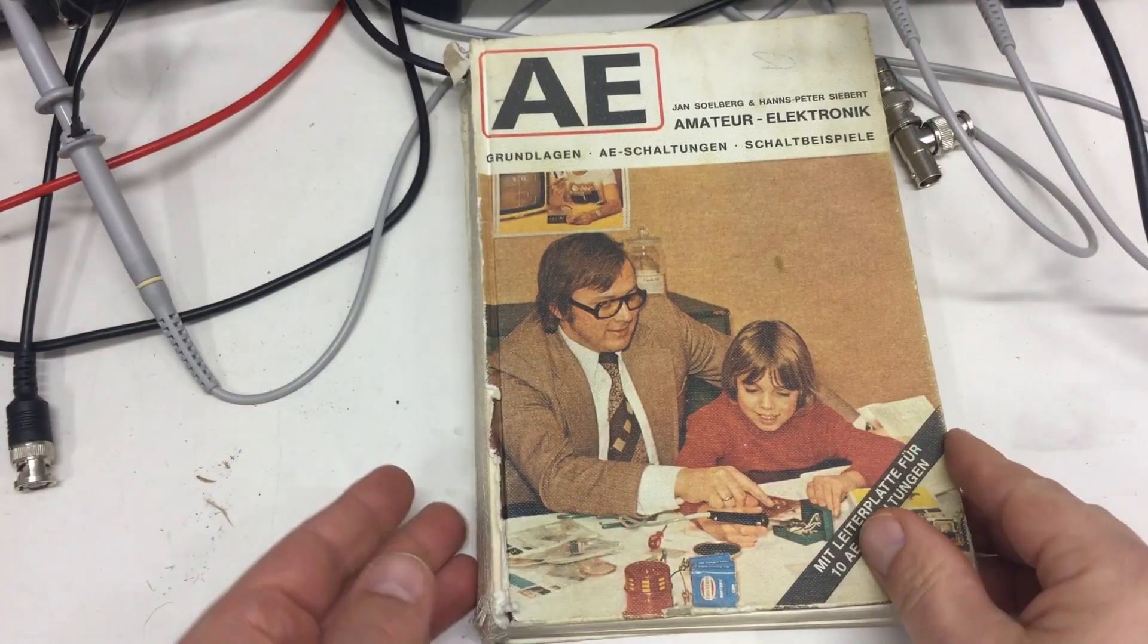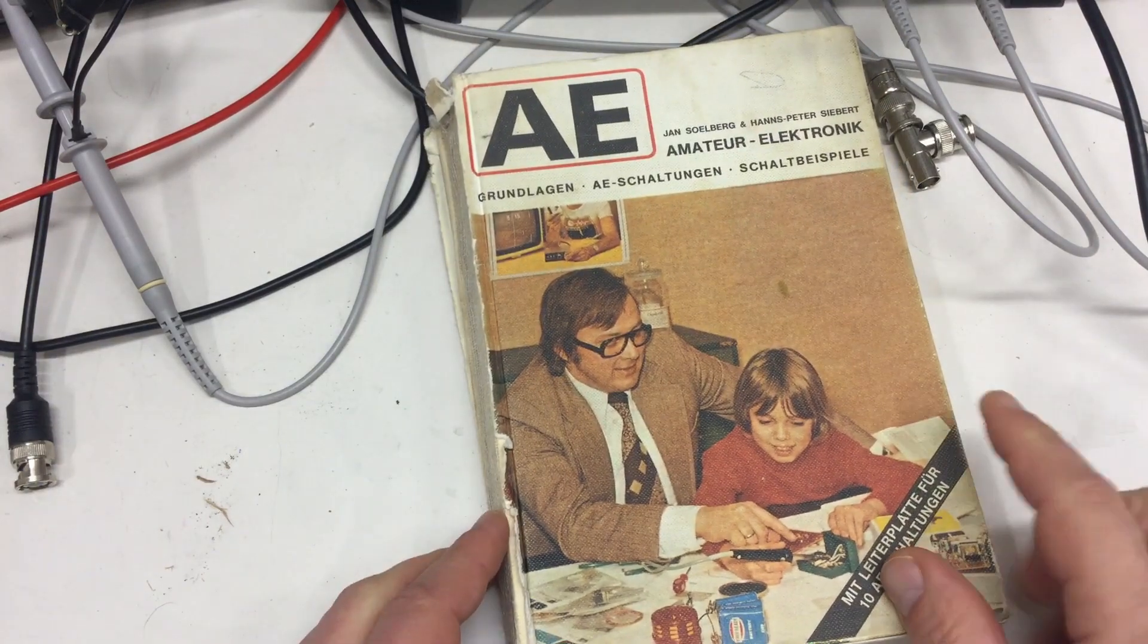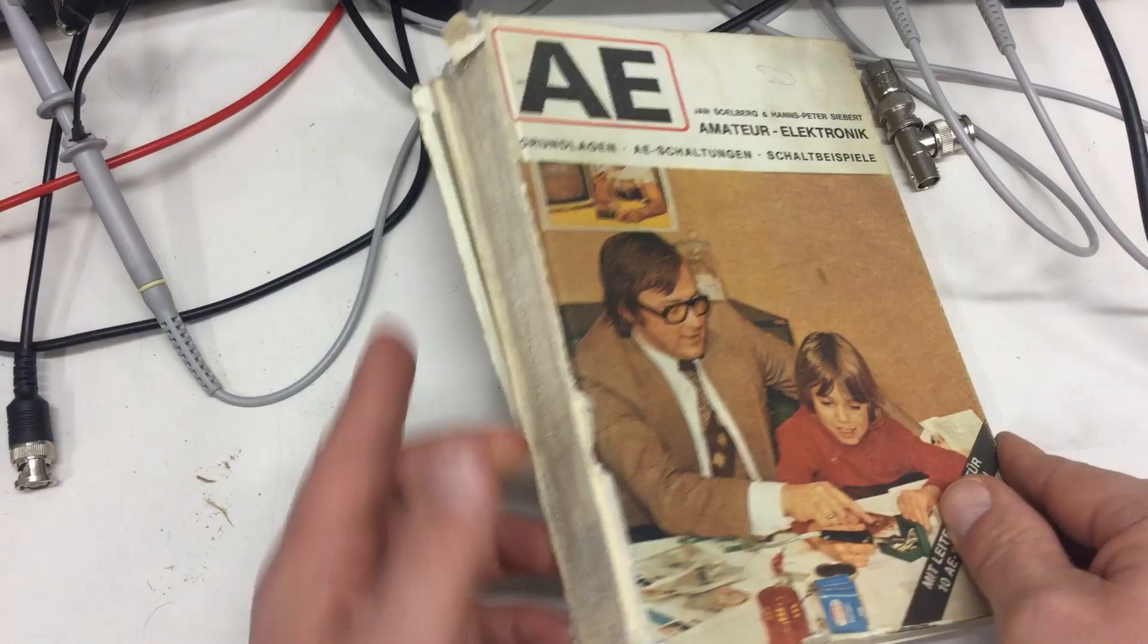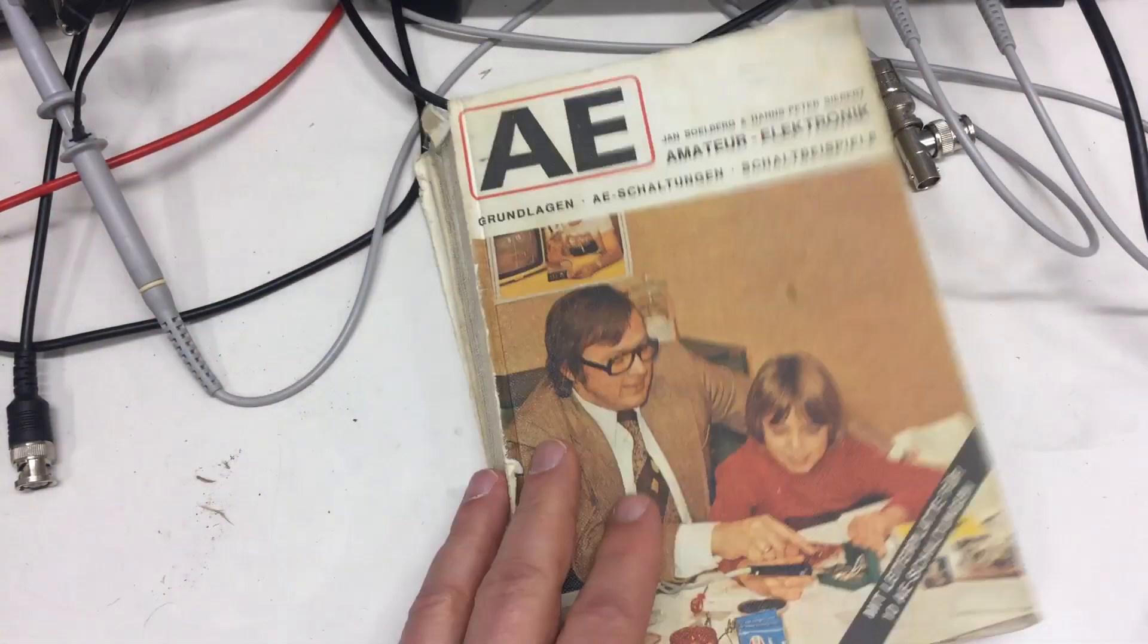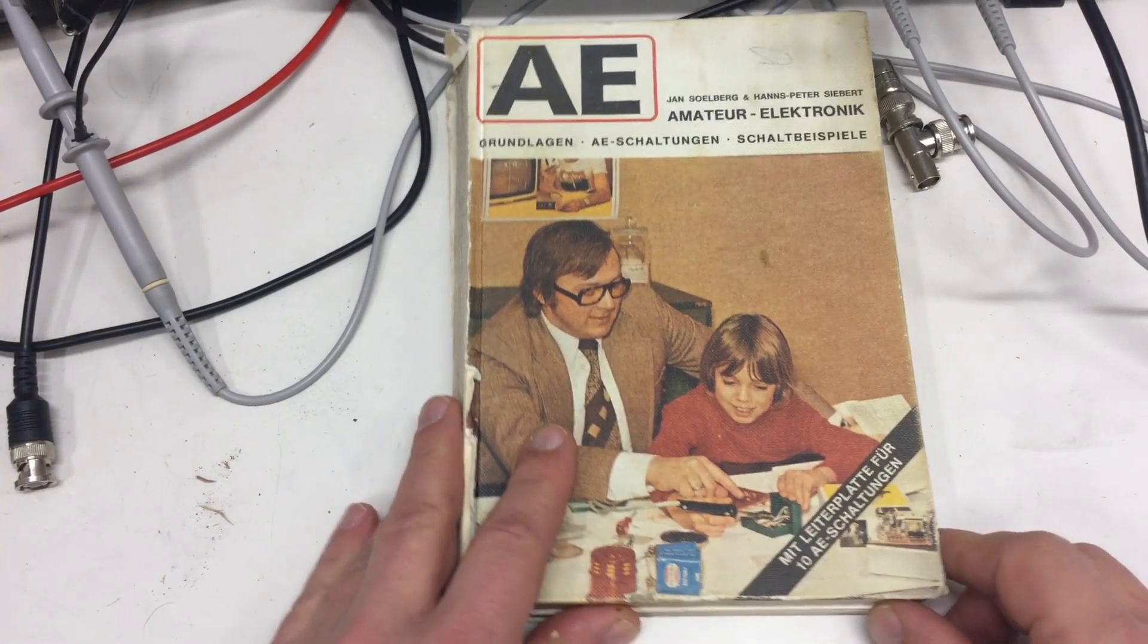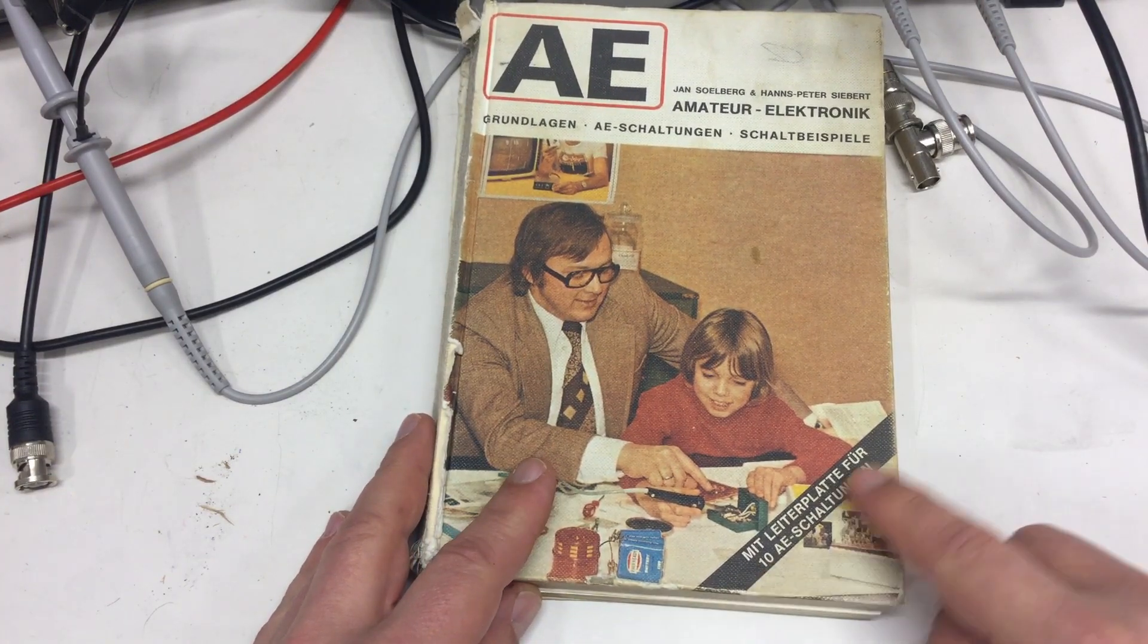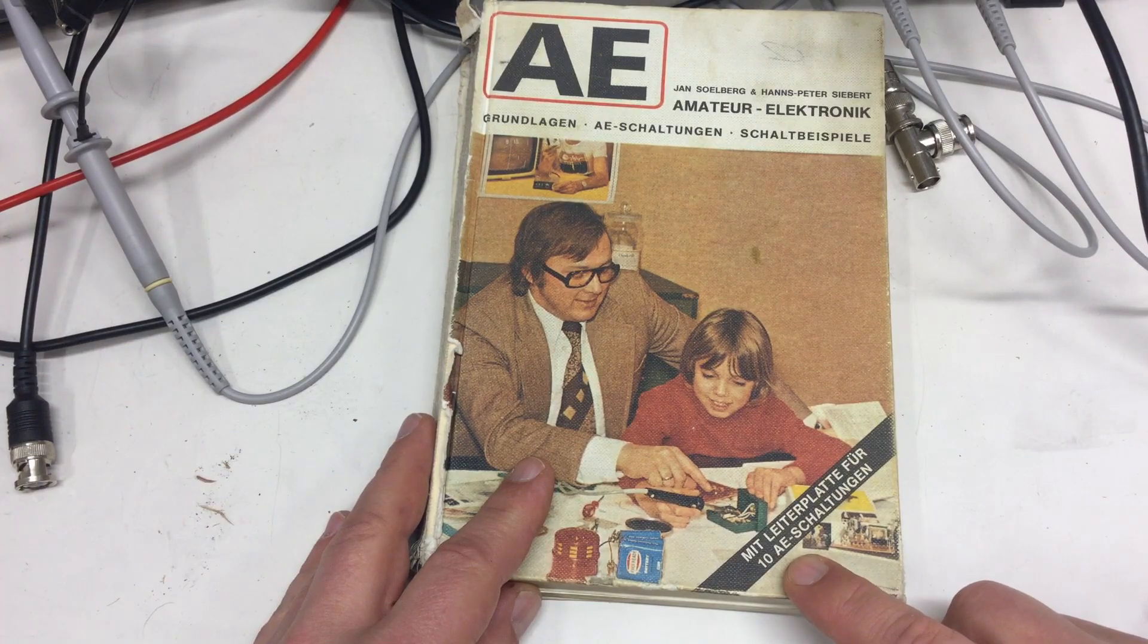There's the book and yeah, in a sorry state. That's not me, that's not my dad. Yeah, the back is somewhere here. It says here there's a printed circuit board for 10 Amateur Electronic circuits.